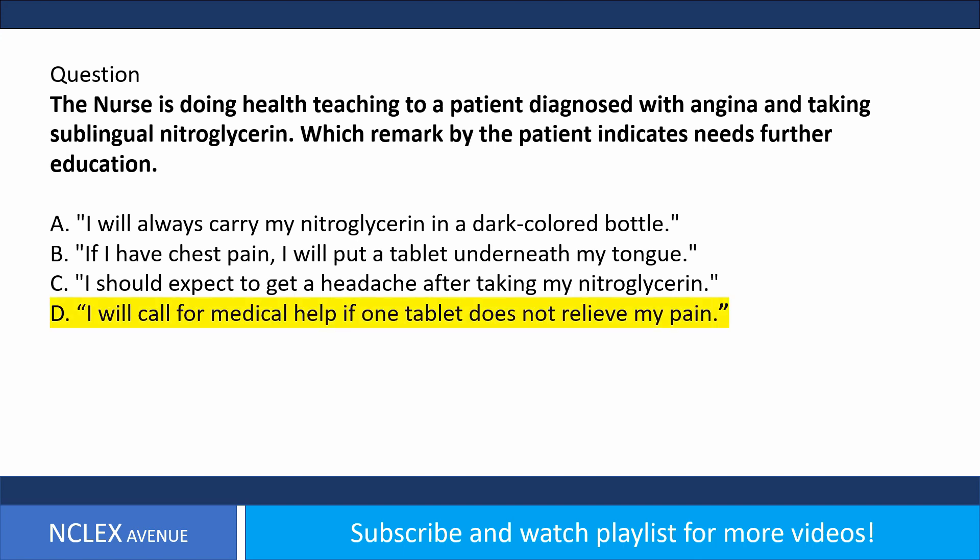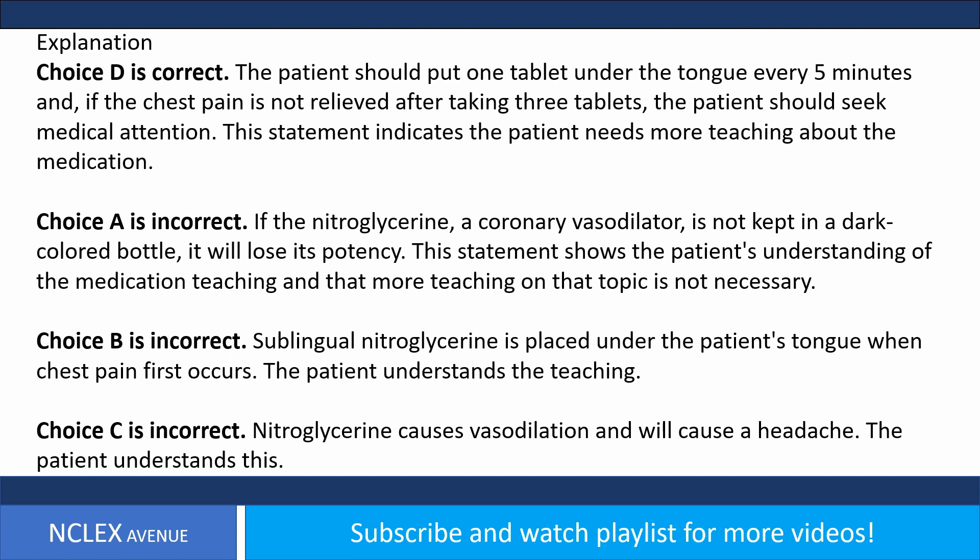Answer. Choice D is correct. The patient should put one tablet under the tongue every five minutes and, if the chest pain is not relieved after taking three tablets, the patient should seek medical attention. This statement indicates the patient needs more teaching about the medication. Choice A is incorrect. If the nitroglycerin, a coronary vasodilator, is not kept in a dark colored bottle, it will lose its potency. This statement shows the patient's understanding of the medication teaching.